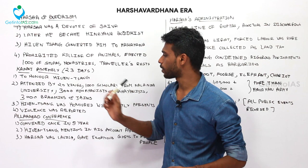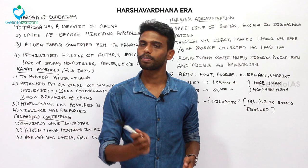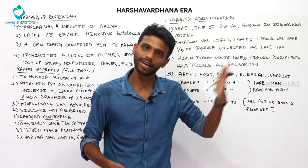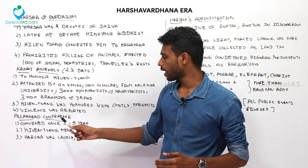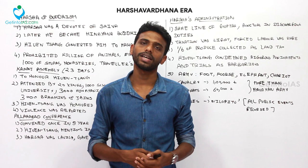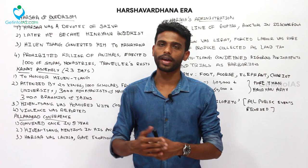Now coming to the Allahabad Conference, also known as Prayag. According to Xuanzang's accounts, this conference was convened once every five years. Xuanzang mentioned Prayag, which is the earlier name for Allahabad. He also noted that Harsha was lavish in spending — he presented many costly gifts and gave away his own necklace and crowns to people.